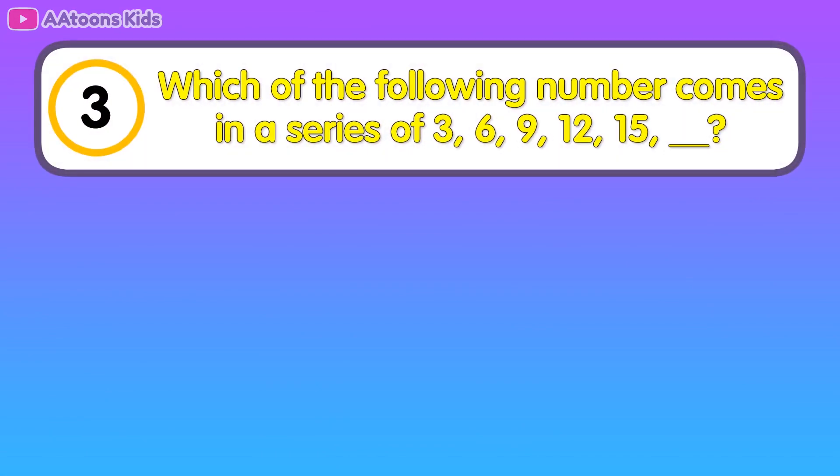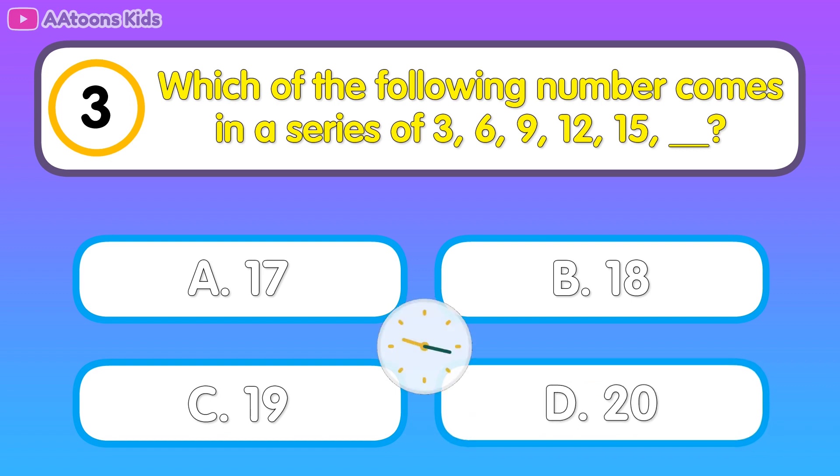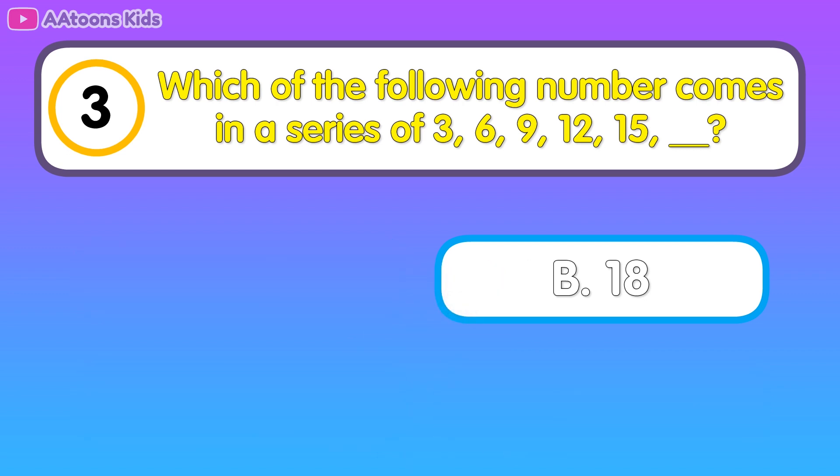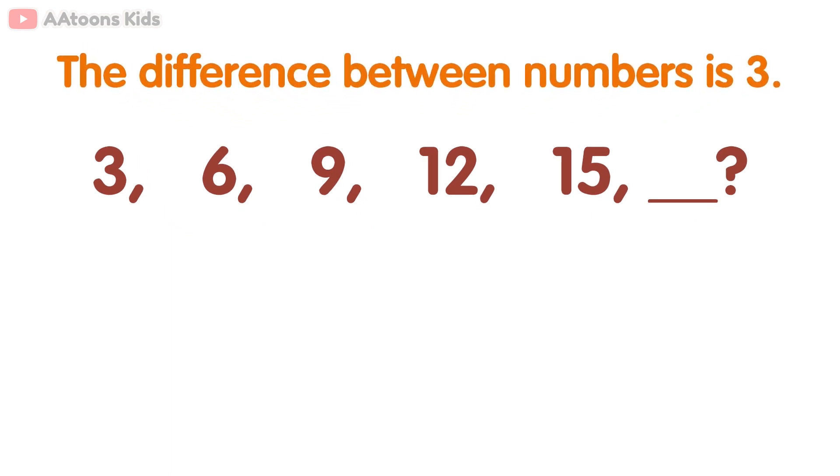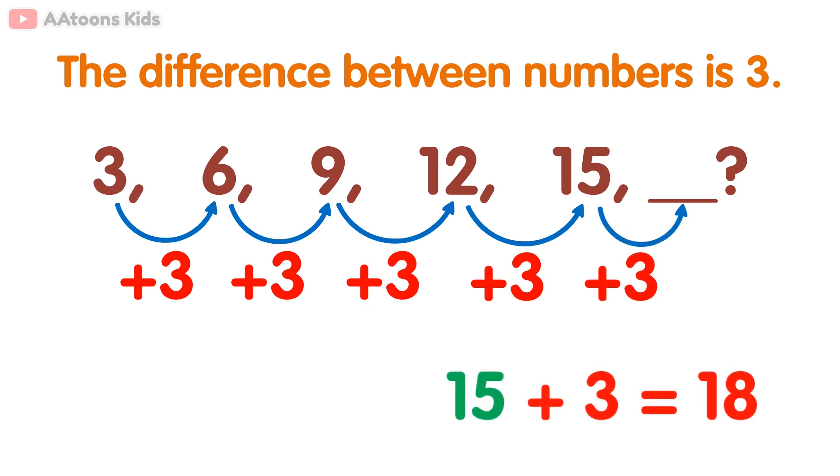Which of the following number comes in a series of 3, 6, 9, 12, 15? The difference between numbers is 3. When 3 is added to 3 becomes 6, 3 is added to 6 becomes 9, 3 is added to 9 becomes 12, 3 is added to 12 becomes 15, 3 is added to 15 becomes 18. So the answer is 18.